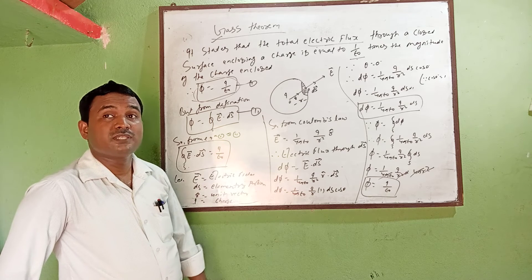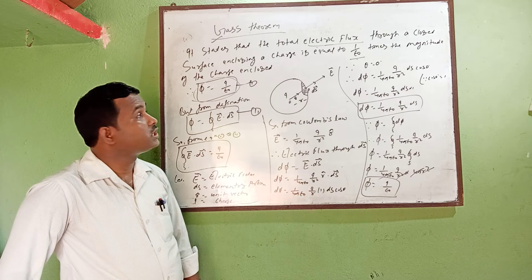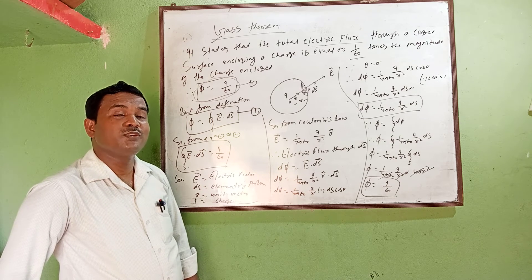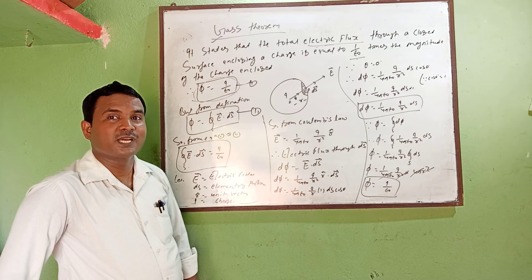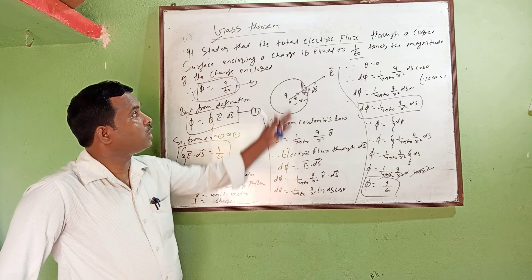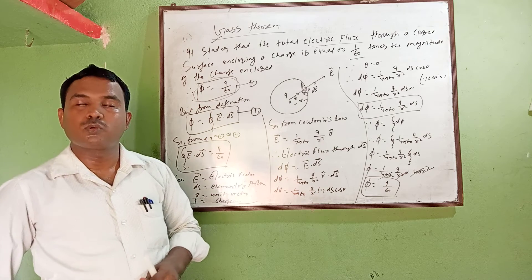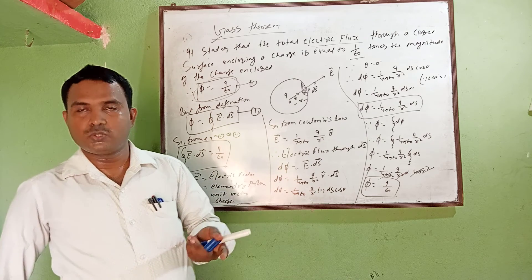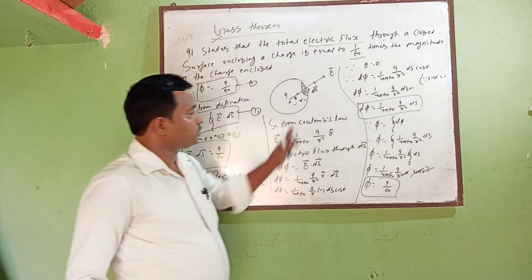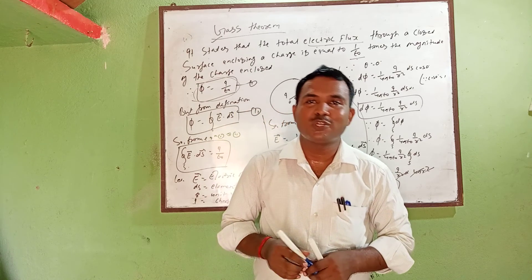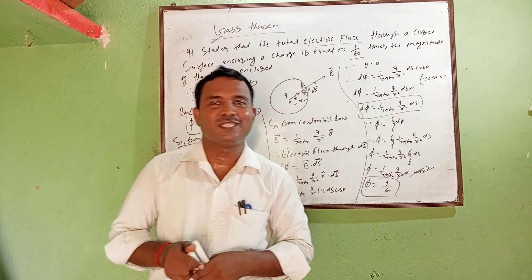According to the statement, we have proved that phi equals Q by epsilon naught. In question banks there are questions asking to prove Gauss theorem using a closed spherical surface. Students should write this question, make notes, and practice this derivation. Thank you.